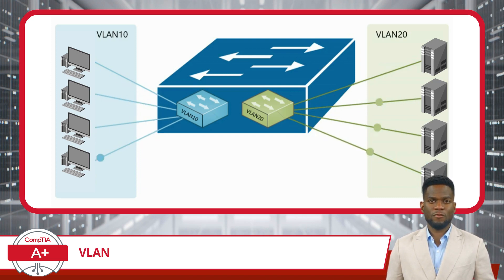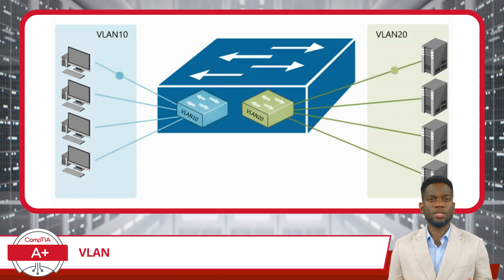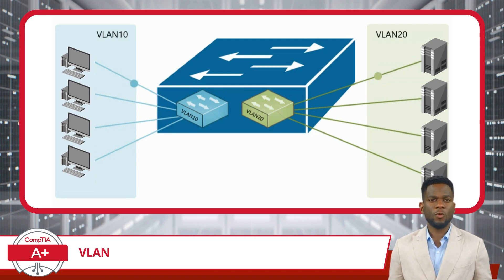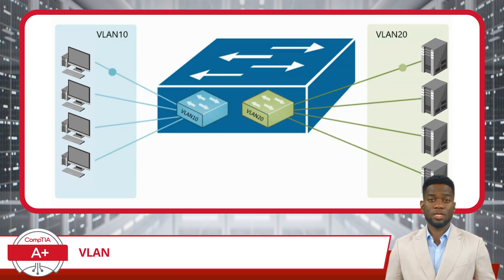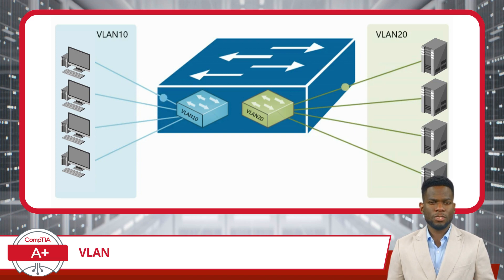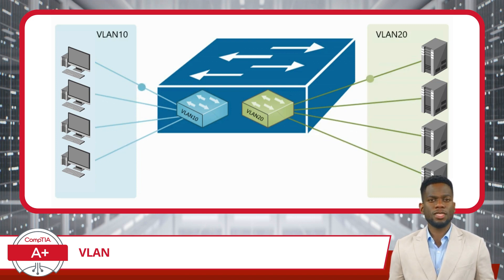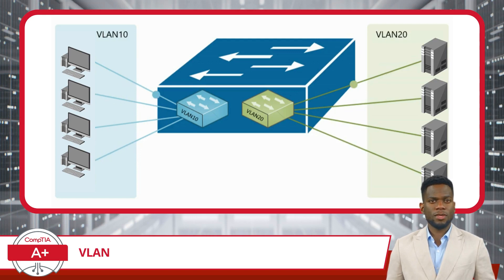Tying this back to our small-town metaphor, think of a VLAN as a sophisticated traffic management system in a bustling city. It allows the city planner, acting as our network administrator equivalent, to create special-use traffic lanes on existing roadways, allowing for the segregation of traffic based on type, purpose, or security clearance. For example, emergency vehicles can be routed through a dedicated fast lane that separates them from regular traffic, ensuring they reach their destination quickly and securely.